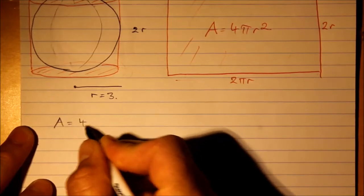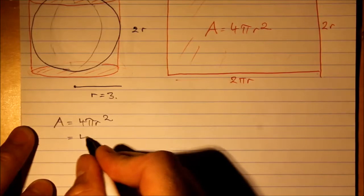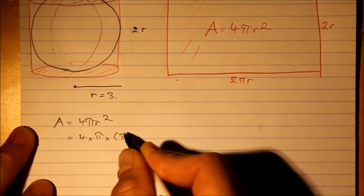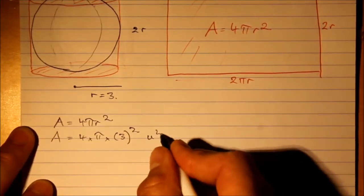Area equals 4πr². And we substitute that in. 4 times π times 3 squared. It's going to be unit squared.